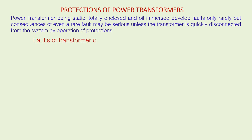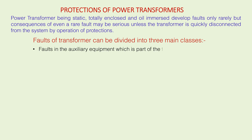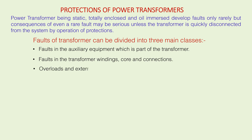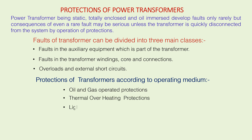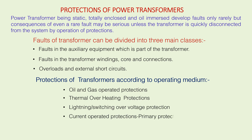Faults of a transformer can be divided into three main classes: faults in the auxiliary equipment which is part of the transformer, faults in the transformer windings, core and connections, and overload and external circuits. Protection of transformers is categorized according to: oil and gas operated protections, thermal overheating protections, lightning and switching overvoltage protection, current operated protections, primary protection and backup protection, and voltage operated protection.